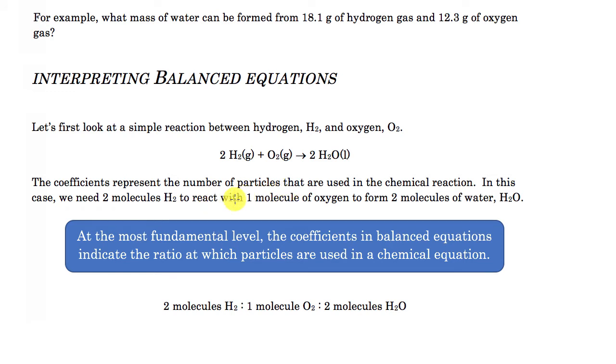So at the very fundamental level, the very basic smallest level possible, we would basically have these particular particles reacting with other particles to create other ones. So they're always going to form in this ratio. That's what the balanced equation tells us. It shows us the ratio at which the molecules interact with each other to create the products.